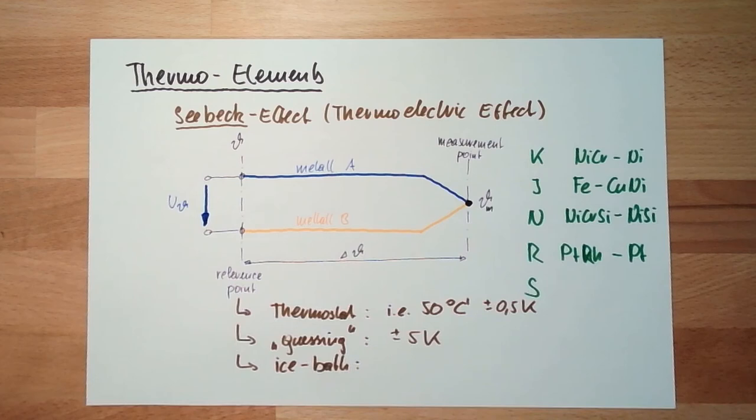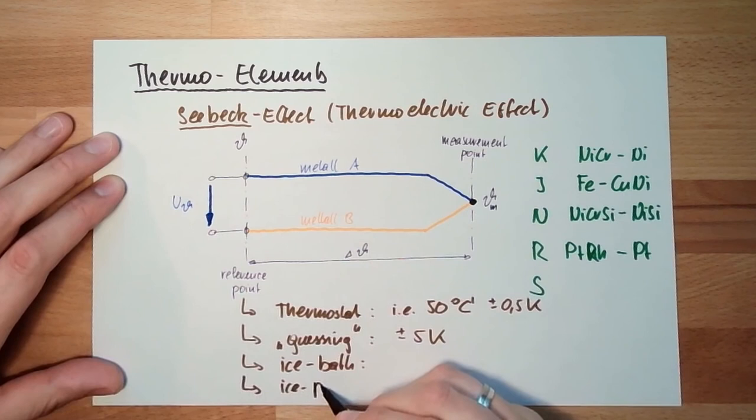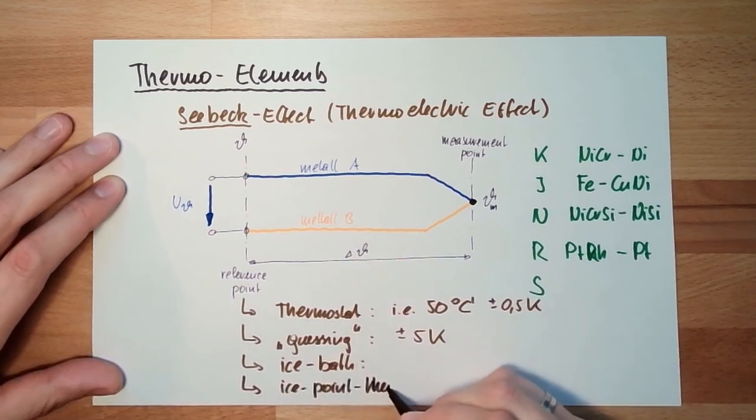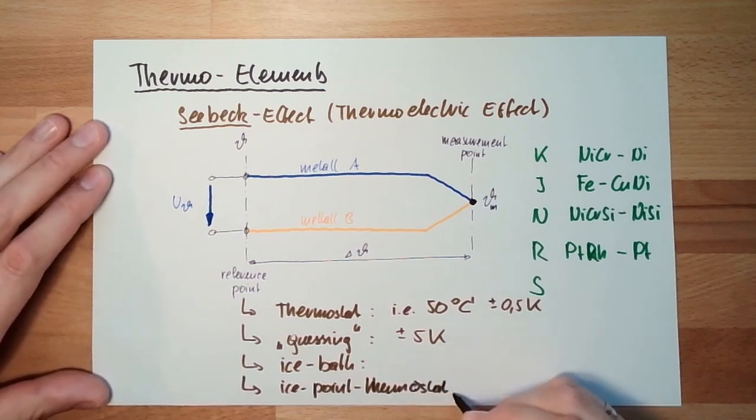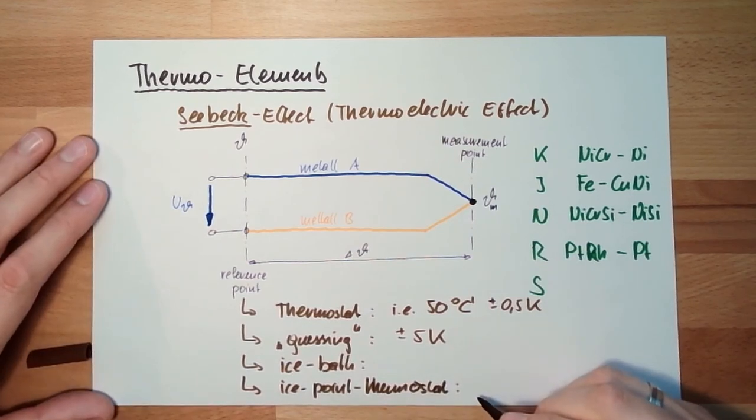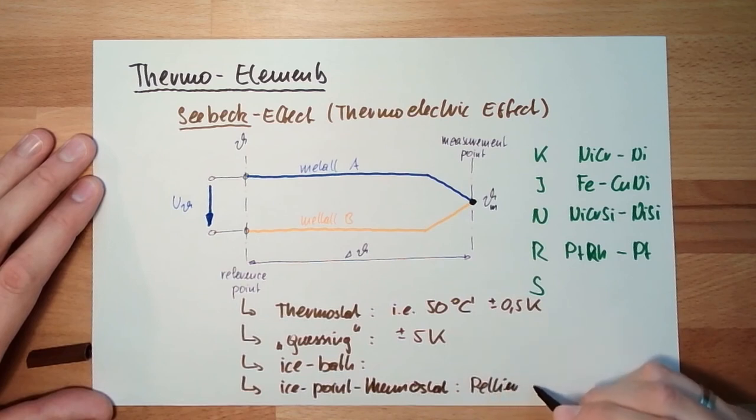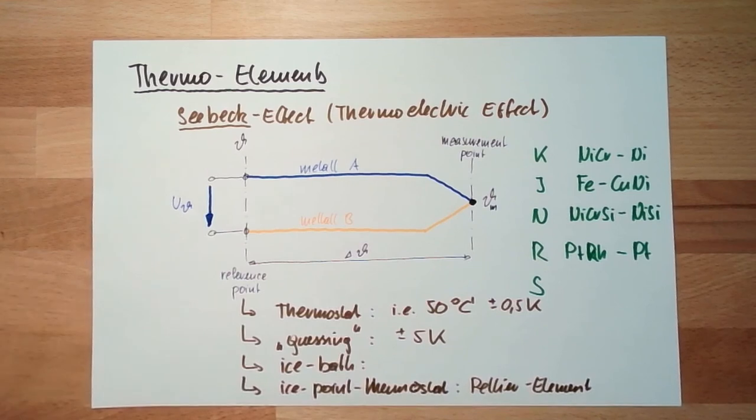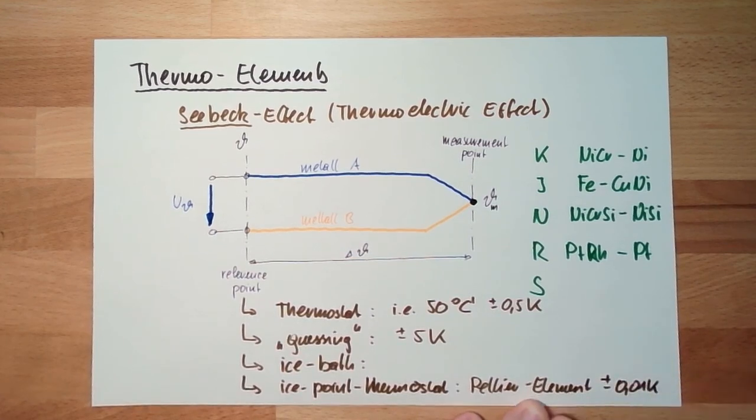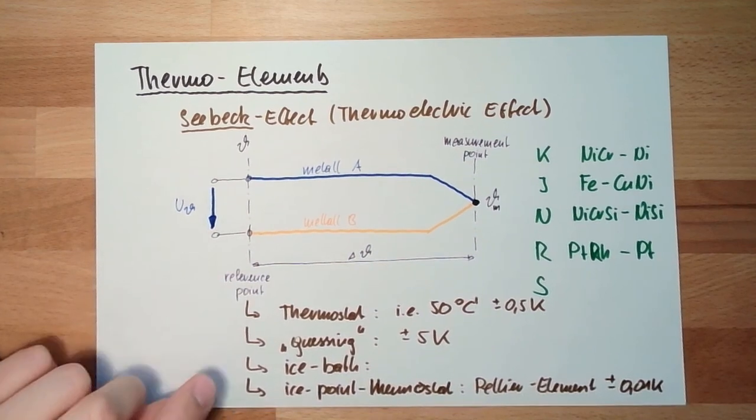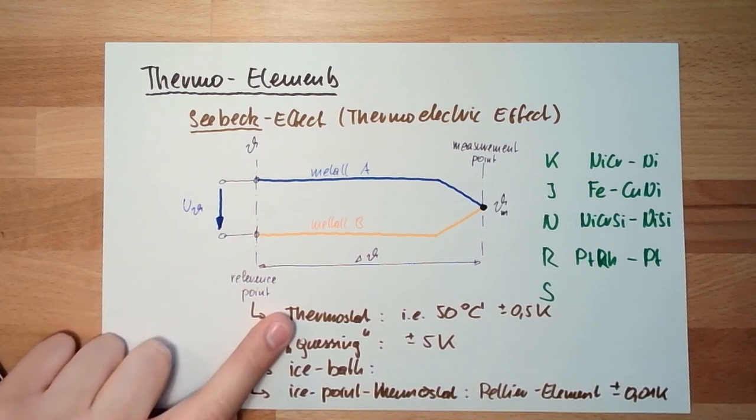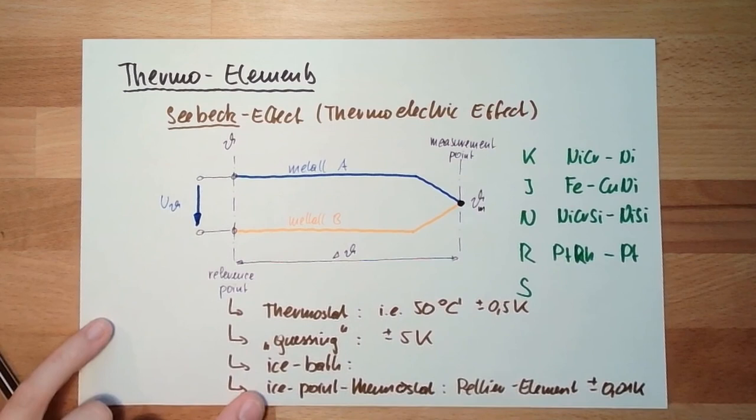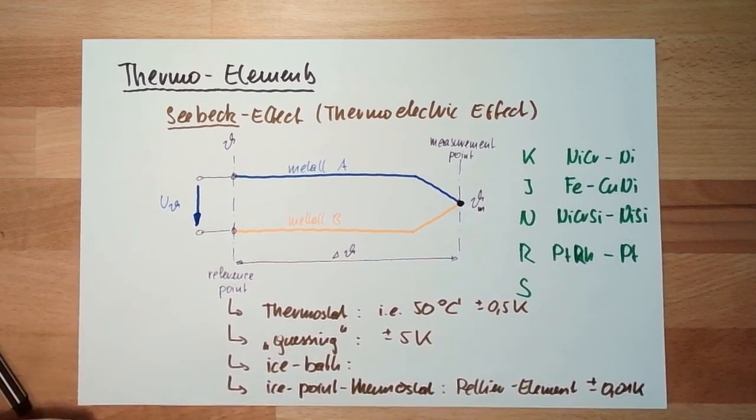However, there's also the so-called ice-point thermostat. These ice-point thermostats are produced usually with some Peltier element. They are very accurate. They really maintain zero degrees Celsius with the accuracy of plus minus 0.01 Kelvin. They recognize ice melting and so on. These are very accurate. This is often done, and if you need to be more accurate, use this. If you don't have the possibility and it's just a temporary measurement, use the ice bath.